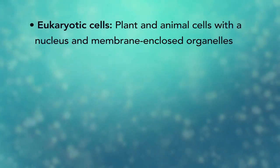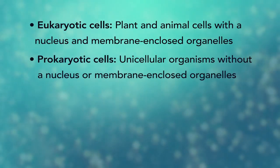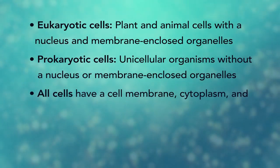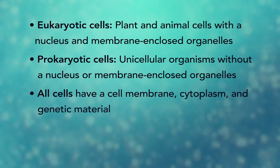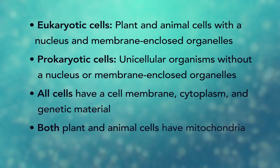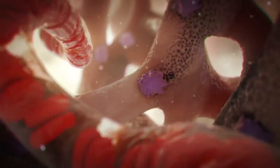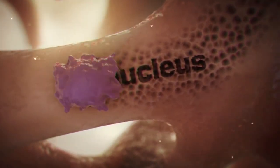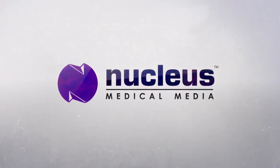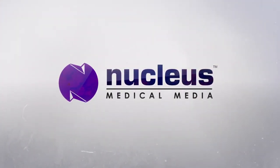In summary, remember, eukaryotic cells are plant and animal cells with a nucleus and membrane-enclosed organelles, while prokaryotic cells are unicellular organisms without these things. All cells have a cell membrane, cytoplasm, and genetic material. And even though only plant cells have chloroplasts, both plant and animal cells have mitochondria.